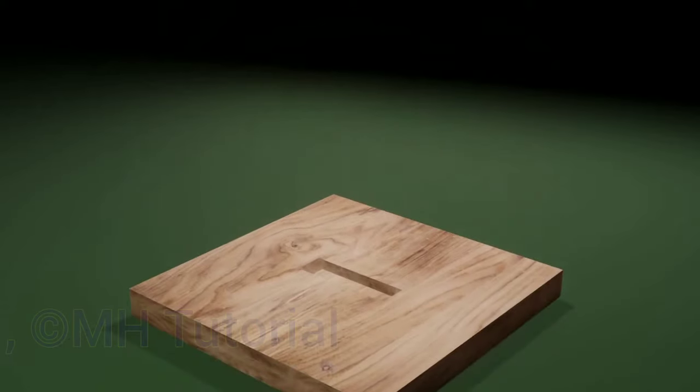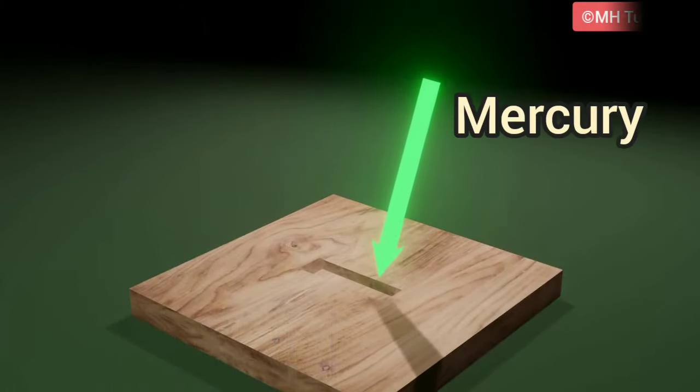At first a wooden block is taken. Make a hole on the middle of the block. This hole is to be filled with liquid mercury.